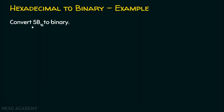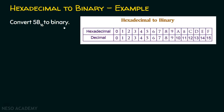We will see an example now. Convert the hexadecimal 5B base 16 to binary. We know when the base is 16, it's a hexadecimal number, and we are required to convert this into binary using the decimal equivalents table. The answer for 5B base 16 is 01001011 base 2.